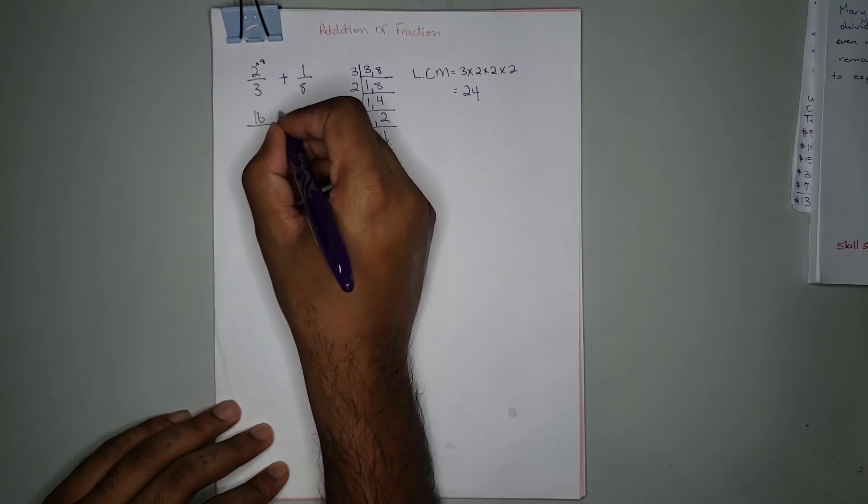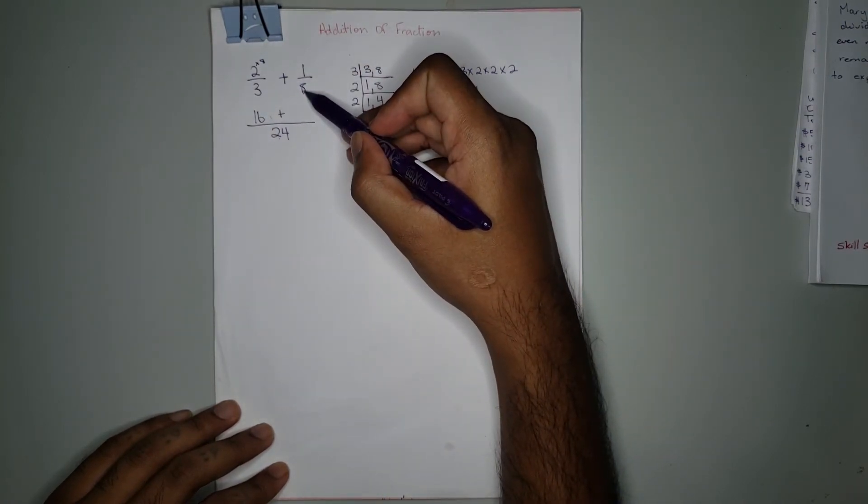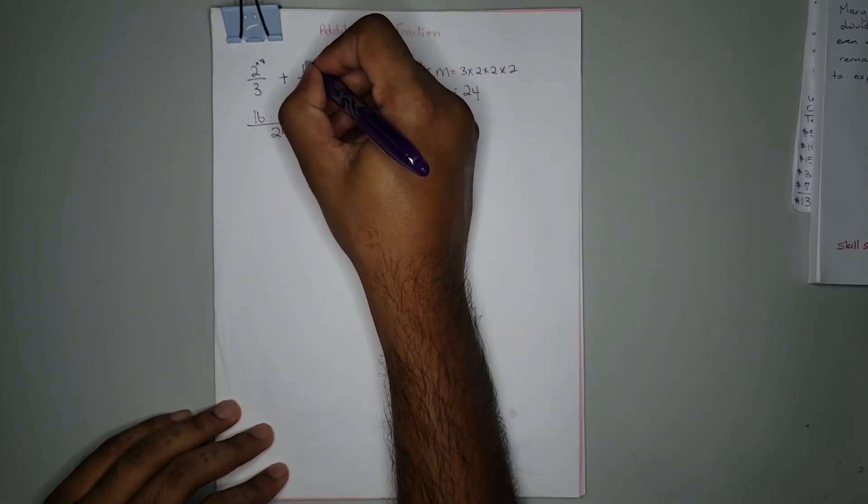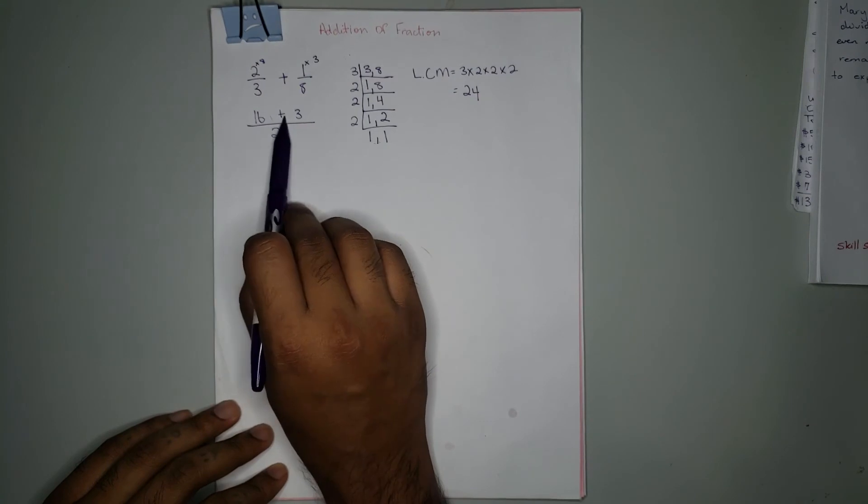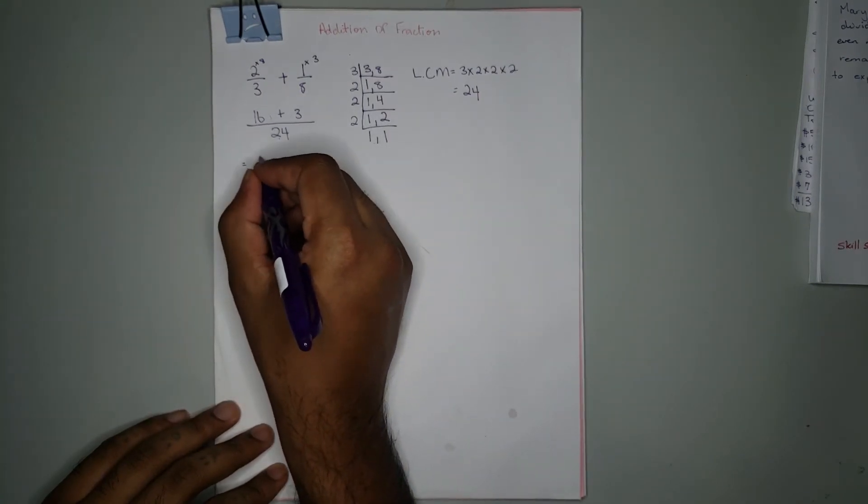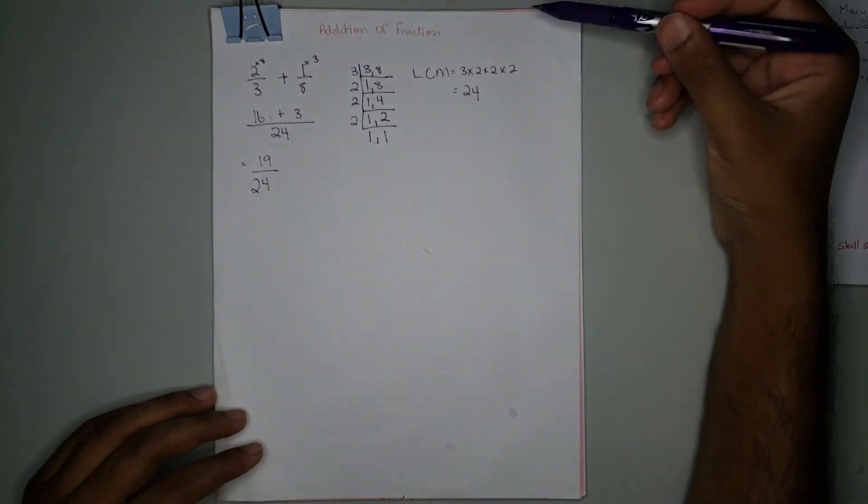Now we add 16 + 3, which equals 19/24. So this is how you do addition of fractions.